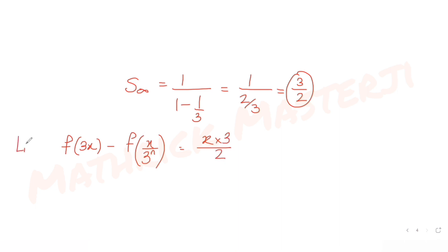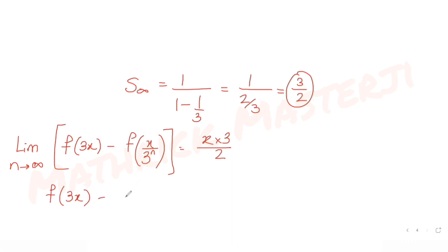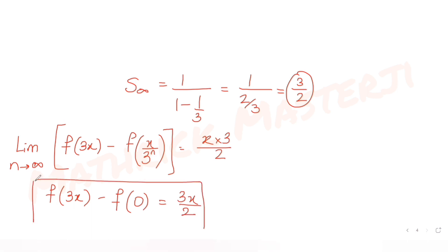Now applying the limit as n → ∞: as n goes to infinity, x/3^n → 0, so f(x/3^n) → f(0) (by continuity of f). The term x/3^n in the denominator goes to infinity, making f(x/3^n) become f(0). So we arrive at: f(3x) - f(0) = 3x/2.